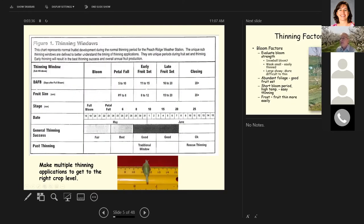Now we have about four thinning compounds that increase carbohydrate shortages and this competition in the tree. If we look at the period after bloom, there's about five periods: bloom, petal fall, early fruit set, late fruit set, and closing are the bloom thinning periods we look at.